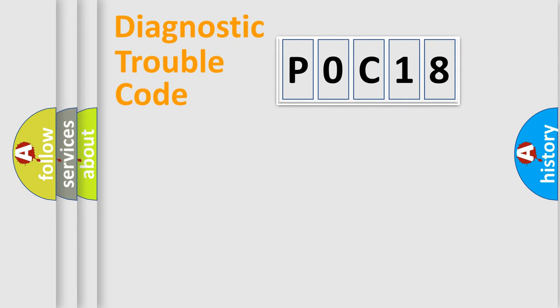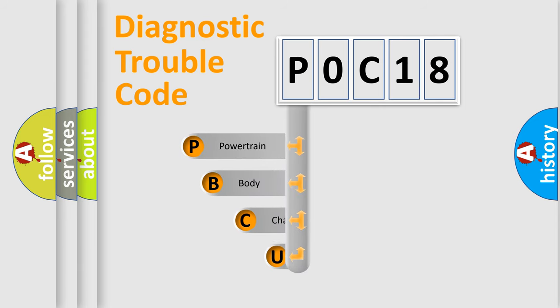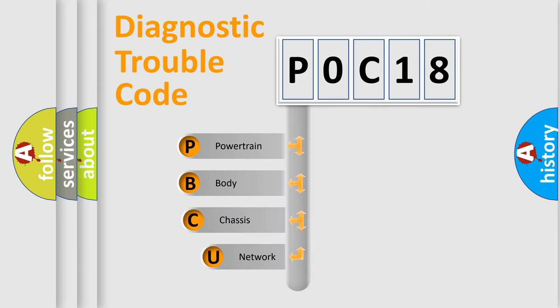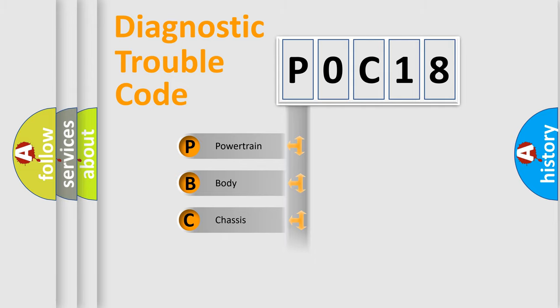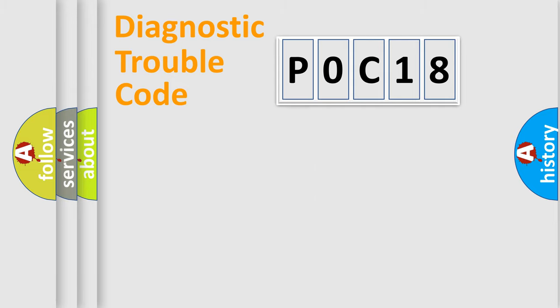Let's do this. First, let's look at the history of diagnostic fault code composition according to the OBD2 protocol, which is unified for all automakers since 2000. We divide the electric system of an automobile into four basic units: Powertrain, Body, Chassis, and Network.